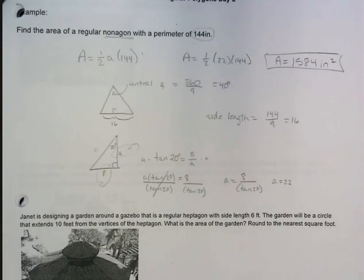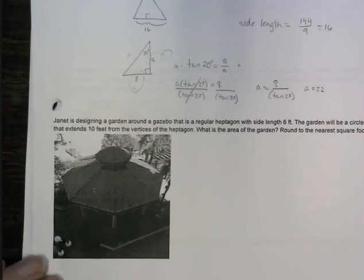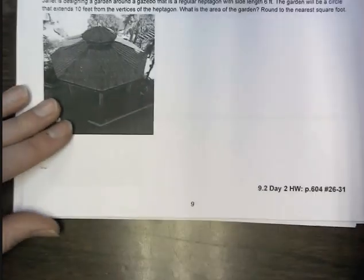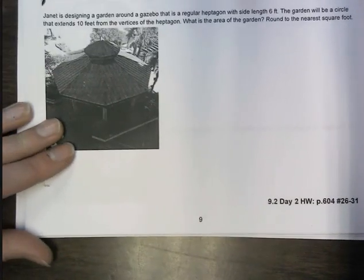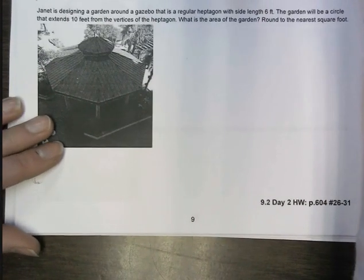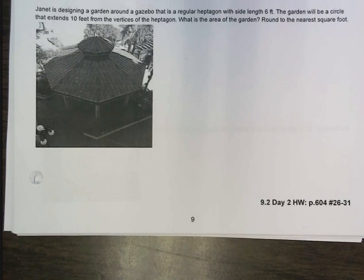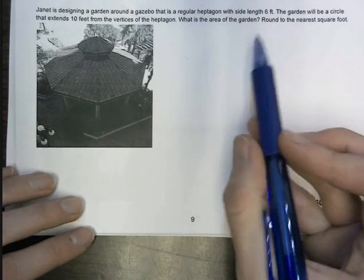Example number two. This is more of a modeling question. So we've got this gazebo, and I'm told that it's a regular heptagon, and each side is 6 feet. Then I've got a garden that's going around the gazebo. It's circular, and it extends 10 feet from the vertices of the heptagon. What is the area of the garden? And we're going to round to the nearest square foot. I'm going to attempt to draw a picture here, so bear with me.